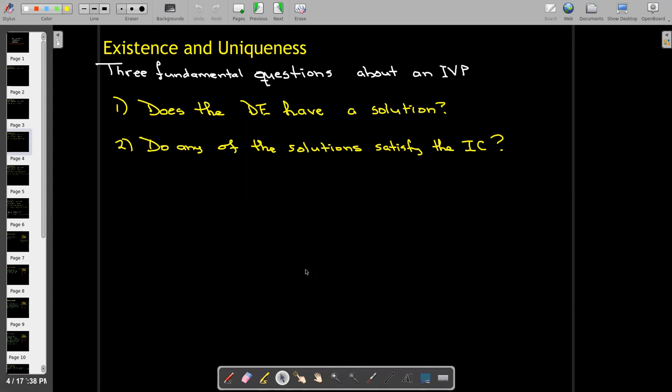If it has a solution or family of solutions, do any of the solutions satisfy the initial conditions of the initial value problem? And if such a solution exists, is it the only one?